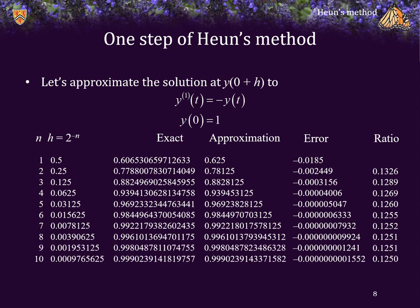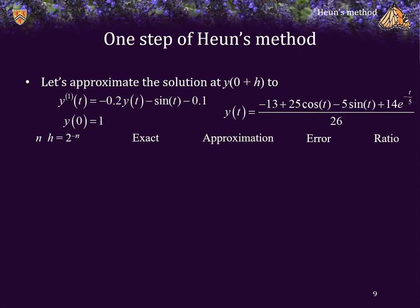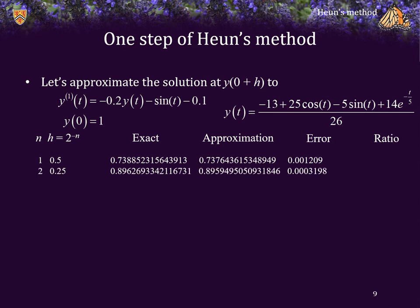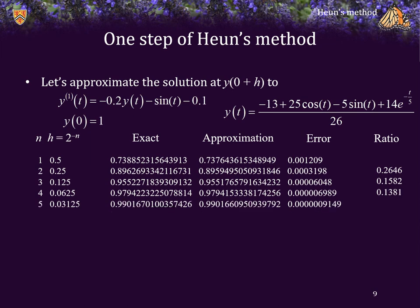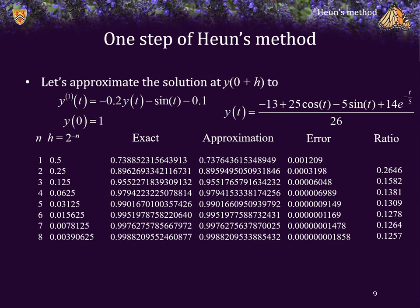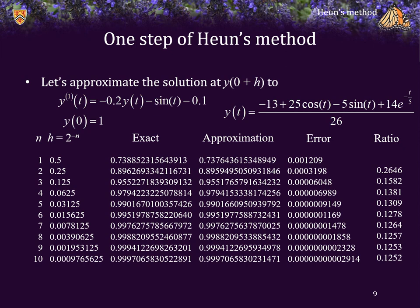As expected, the error is now dropping by almost exactly one-eighth. Here's another initial value problem with a different solution. Once again, we approximate the value and compare it to the exact value. At every single step the error is dropping — not initially by one-eighth, but as h gets smaller, it gets closer and closer to one-eighth. So with reasonable confidence we can say that Heun's method has an error that is order h cubed.